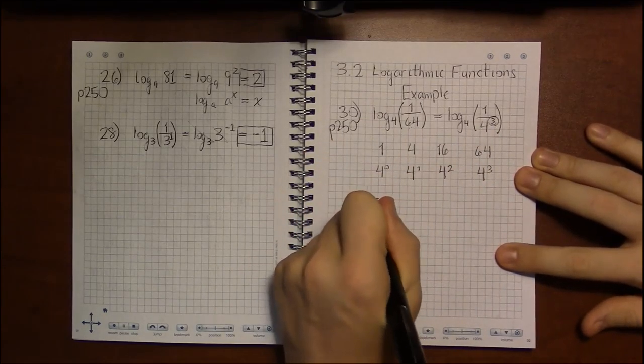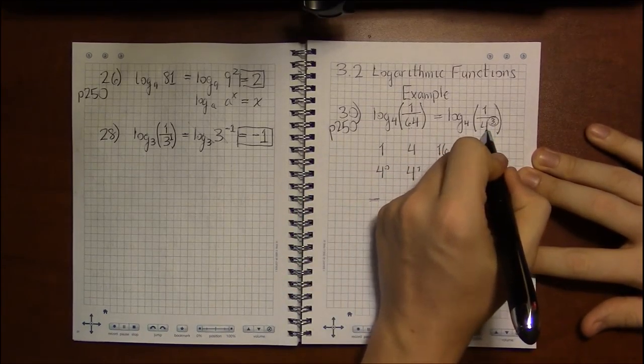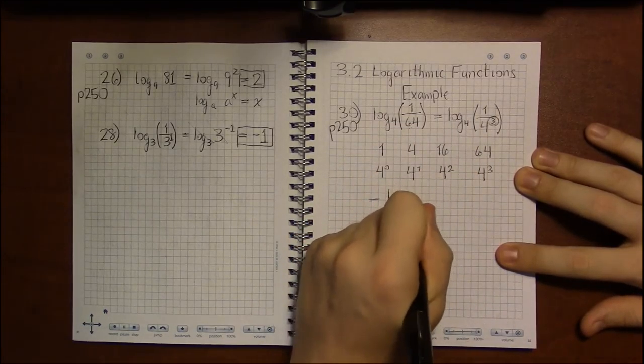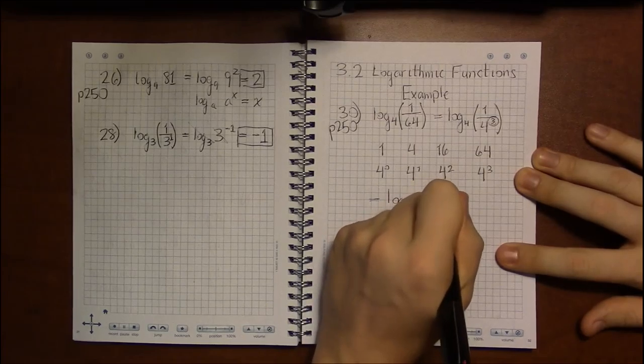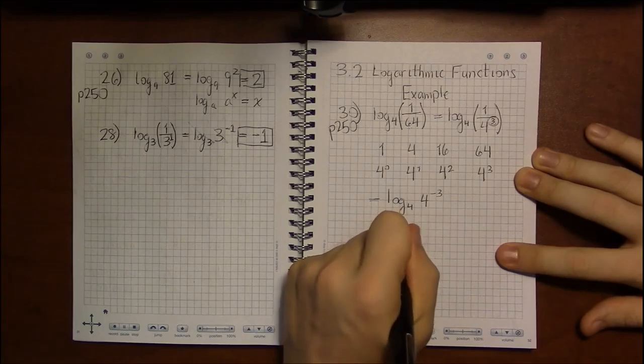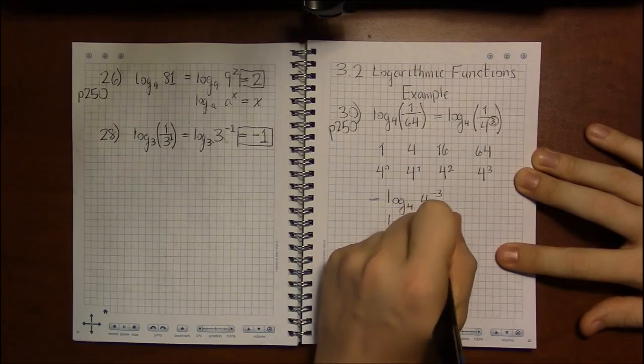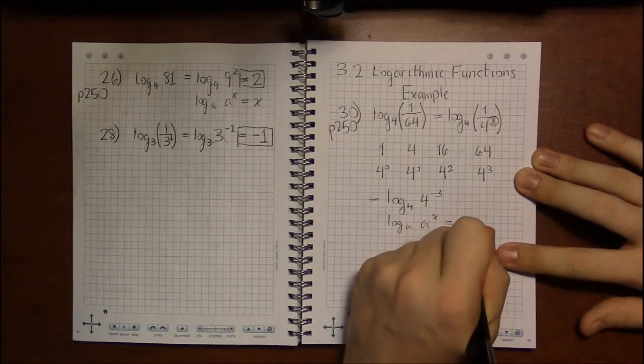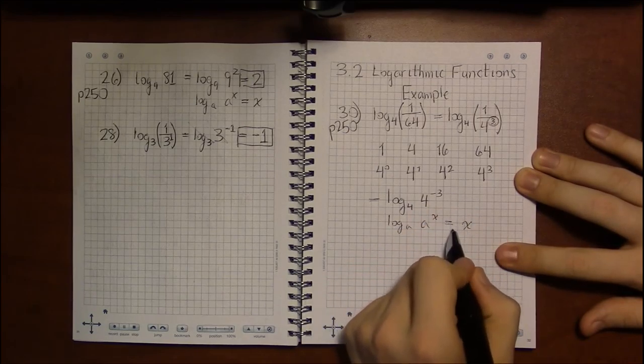So 64 I can write as 4 cubed. And then if I move the 4 to the numerator, I can do that by making the exponent negative. And then I have log base a of a to the x. I have something that fits this form very nicely. And according to the log properties, this is just x.